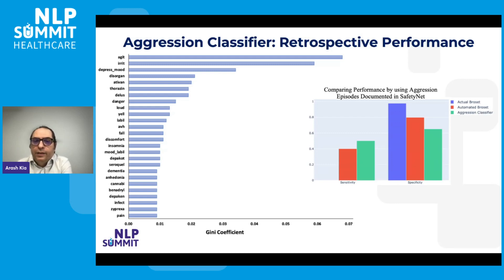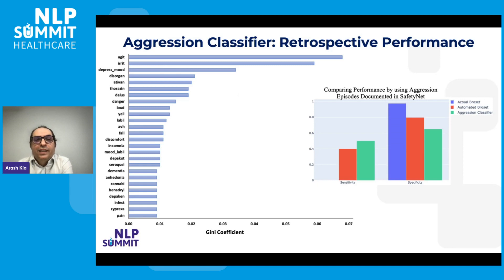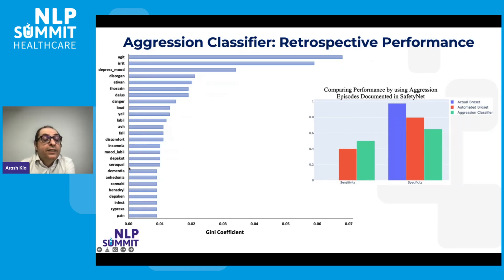Looking at the most important features in the classifier, we see agitation and irritability — consistent with the original questionnaire — but the model also considers different diagnoses, signs and symptoms, and different types of medications such as antipsychotics, antidepressants, and comorbidities like dementia.